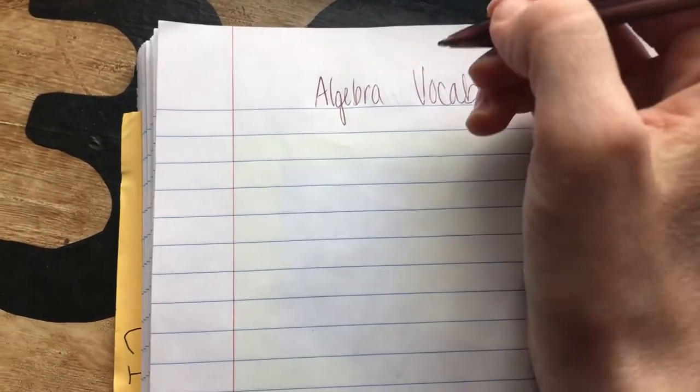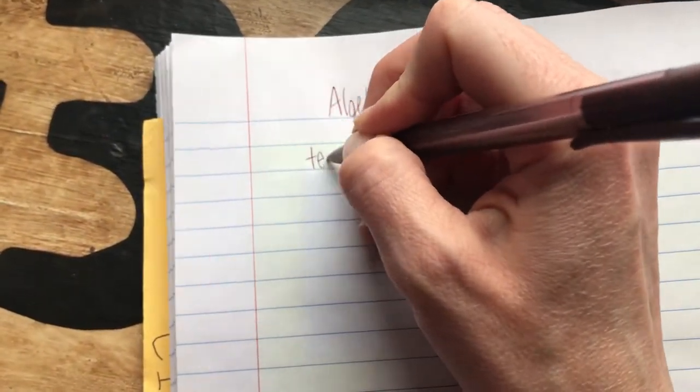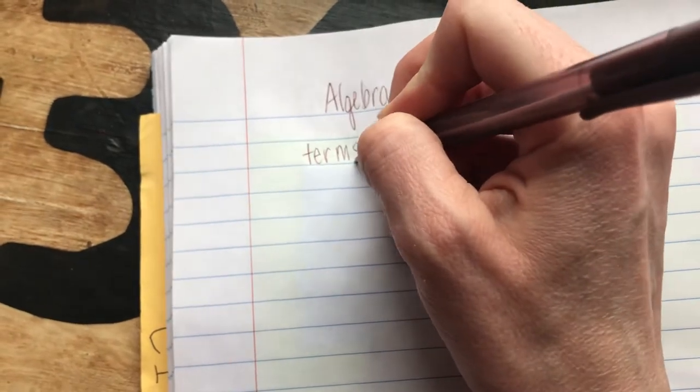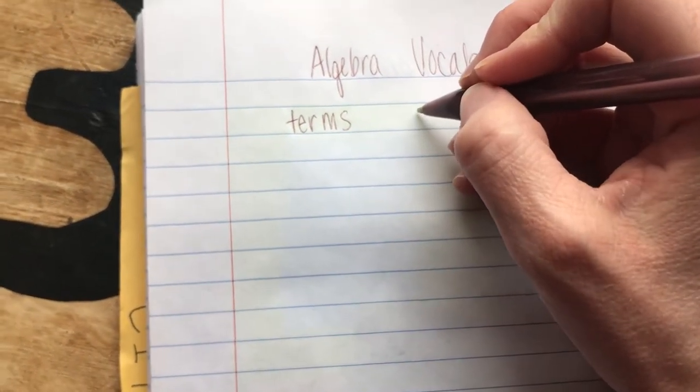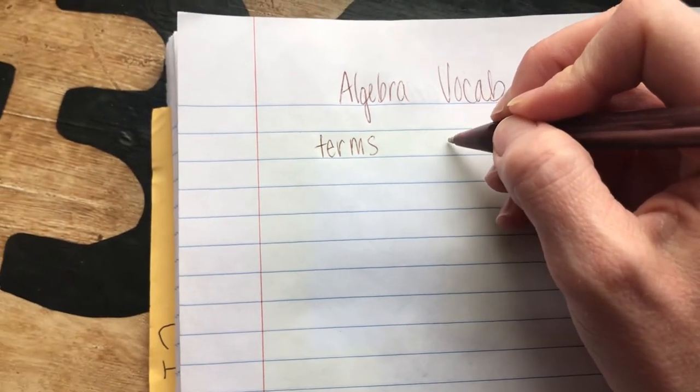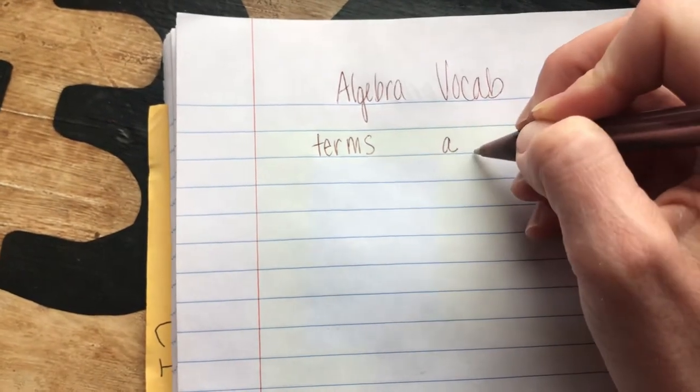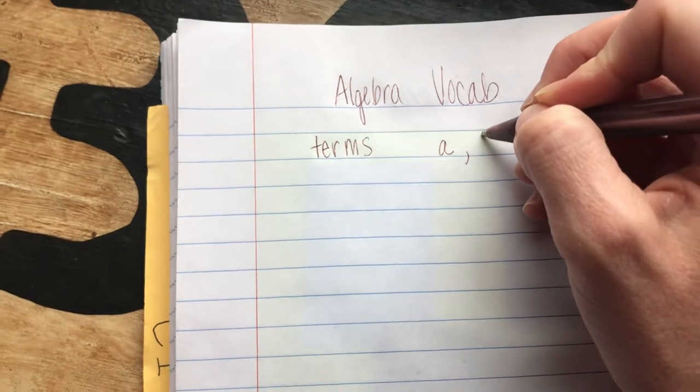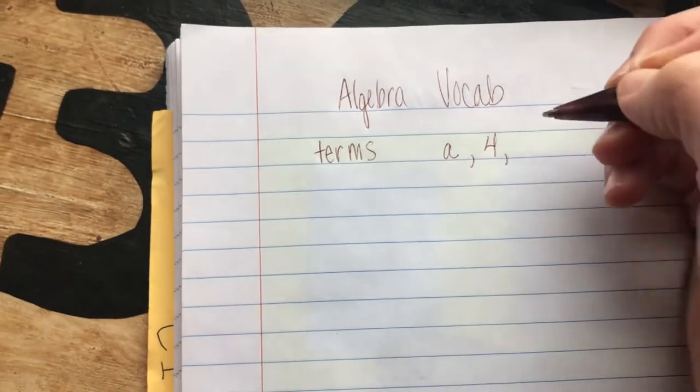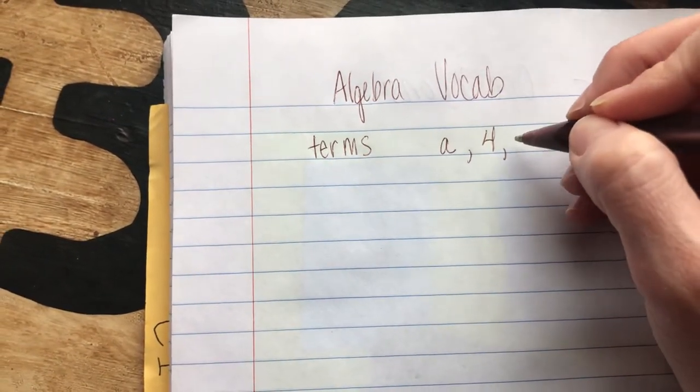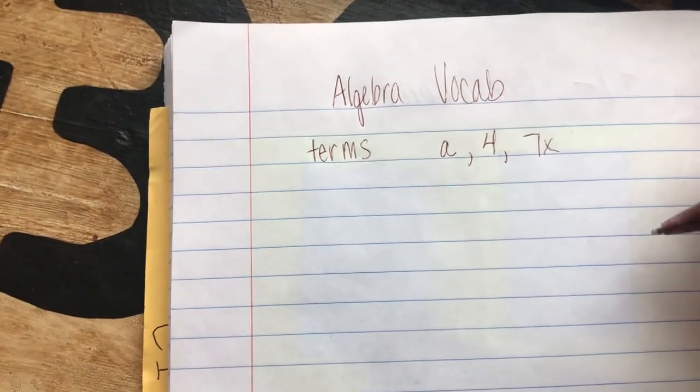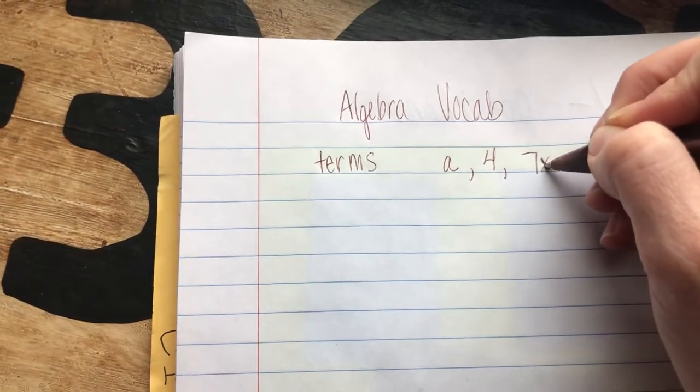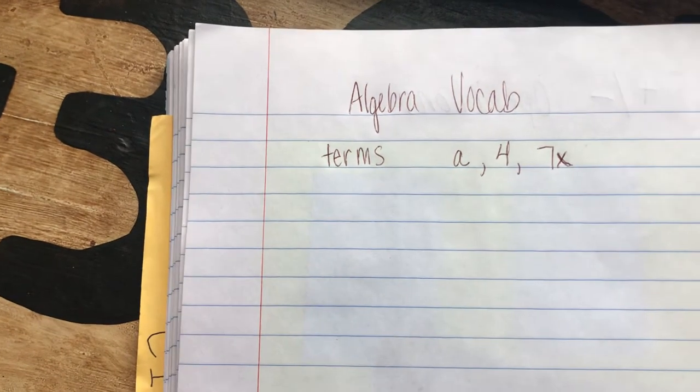The first thing we're going to write down is a definition of, or some examples of, the word term. Terms are just single letters like A, or single numbers like 4, or a term can be a number and a letter combined, like 7x. When we put terms together, that's what makes an expression or equation.